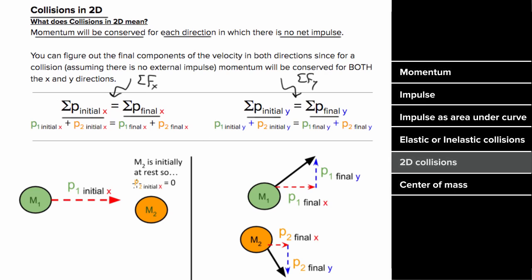So in other words, if two spheres collide in a glancing collision, the total momentum in the x-direction initially should equal the total momentum in the x-direction finally if there's no net impulse in that x-direction. And the total momentum in the y-direction initially, of which there is none in this case, would have to equal the total momentum in the y-direction finally, if there's no net impulse in the y direction.